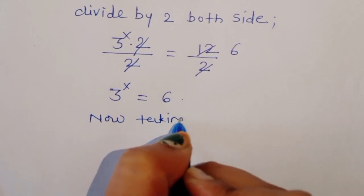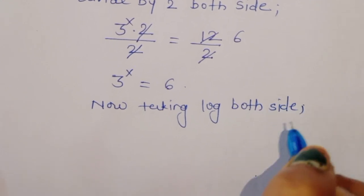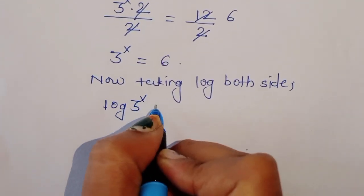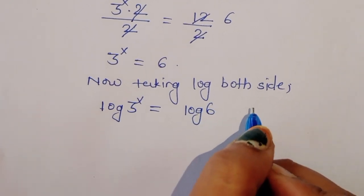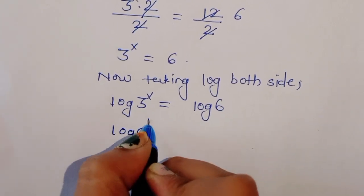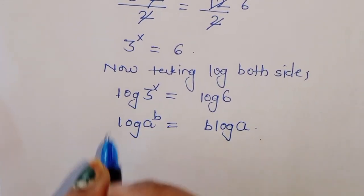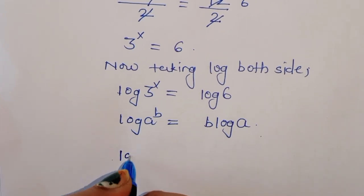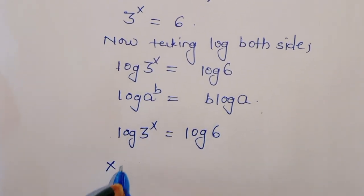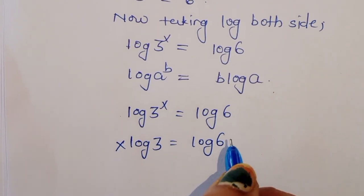Now, taking log on both sides, we will get log of 3 power x is equal to log of 6. We know the formula: log of a power b is equal to b times log of a. So we can write x times log of 3 is equal to log of 6.